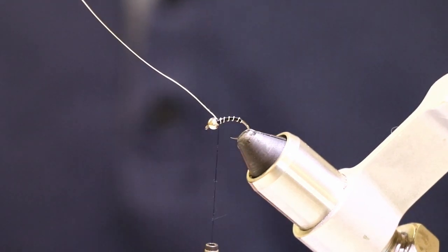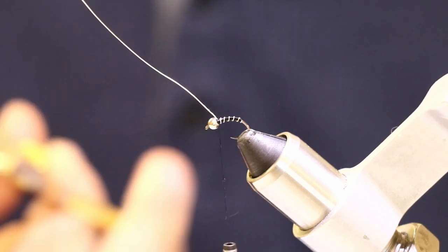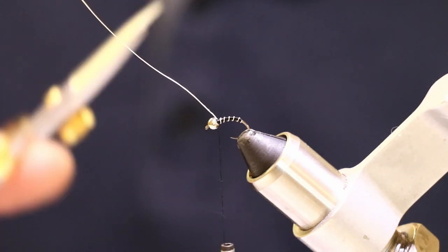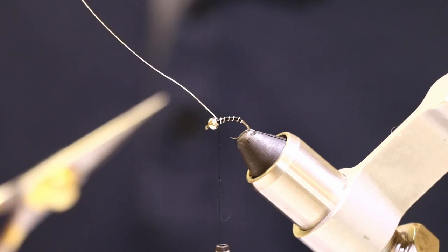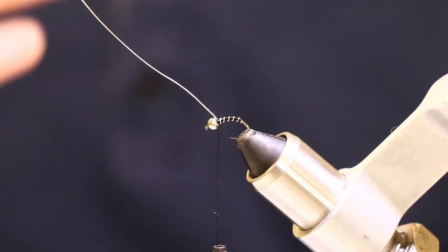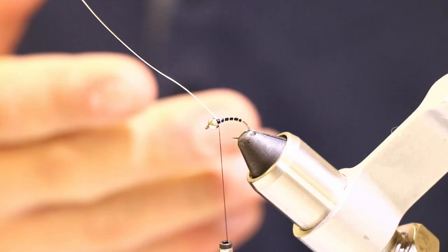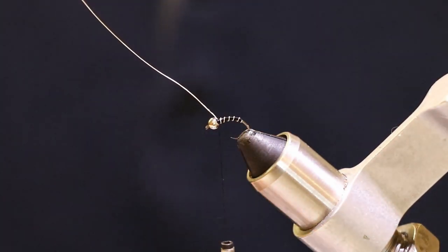Definitely just quick tip, never use your scissors, your fly tying scissors, to cut off the wire. That's going to dull your scissors like crazy. So I'm just going to show you really quick how to do that. But first let's tie off our wire.